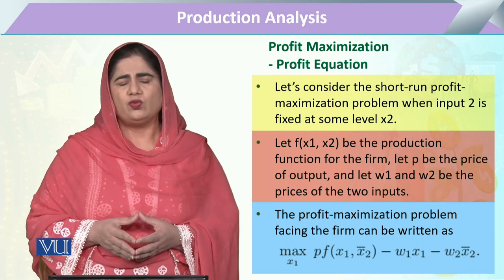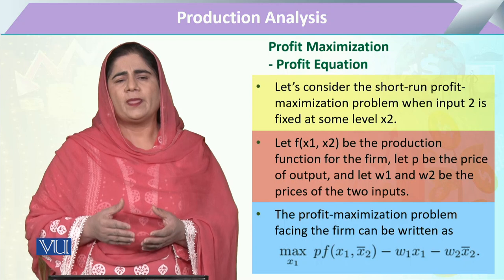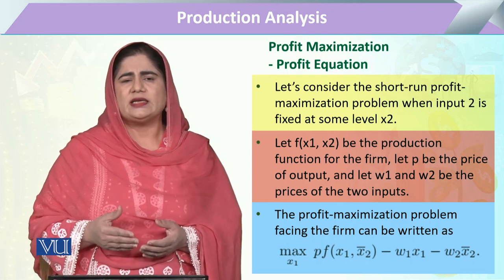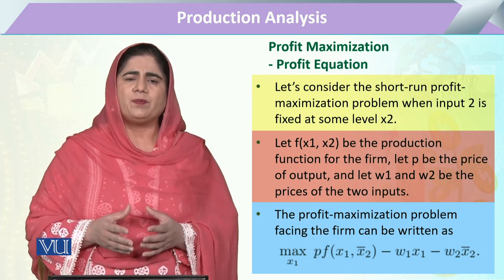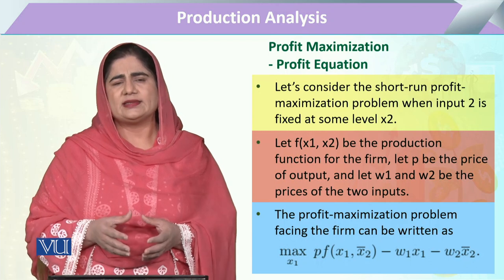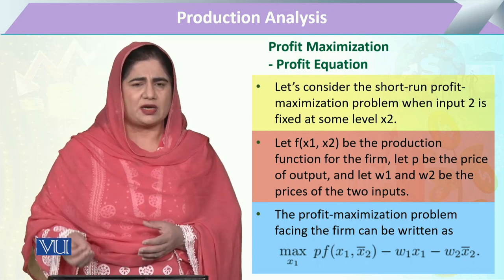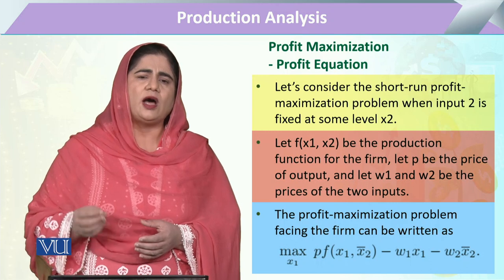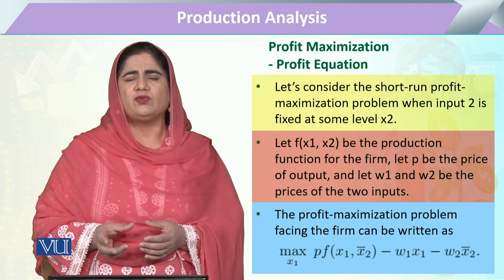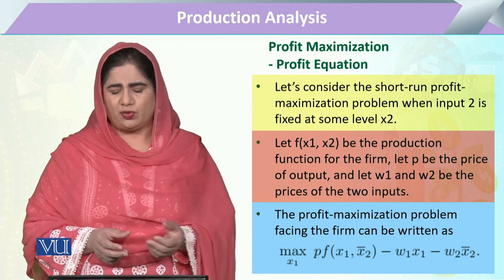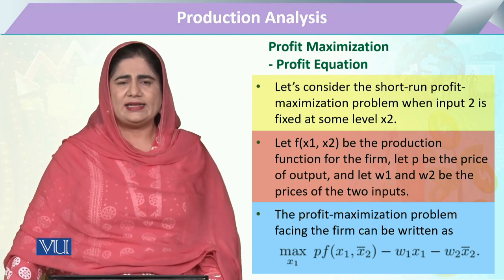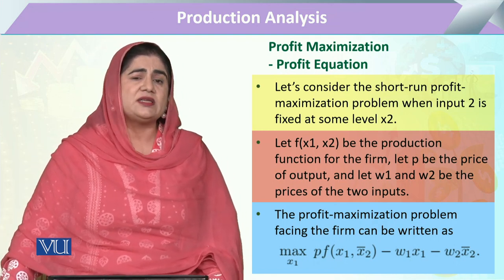We have seen how the production of an output increases with the increase in one input. After accumulating this knowledge, we can assess what the change in the objective function — meaning cost — will be, and how that change will affect output. The difference between revenue and cost is what will accrue to the entrepreneur. Now, coming to our main equation: optimization entails that we want to maximize profit.